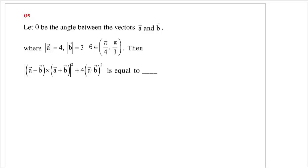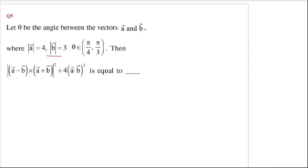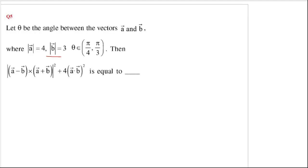Let theta be the angle between a and b. Mod a is equal to 4, mod b is 3, and theta is between pi by 4 to pi by 3. Then this value is equal to — this is a very easy question, simple identities apply here, nothing difficult.